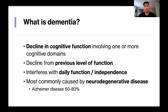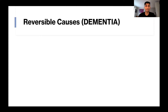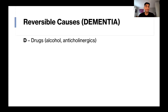So with that background, let's get into the reversible causes. We'll be using this convenient acronym, DEMENTIA. Starting with D, this stands for drugs — specifically alcohol or any medication that has anticholinergic effects. This includes a wide array of different drugs, but any sort of drugs that are an antagonist on the cholinergic receptor can result in the dementia symptoms.